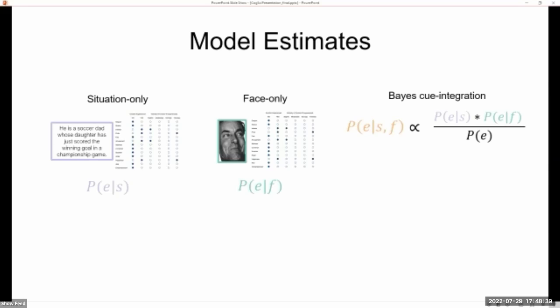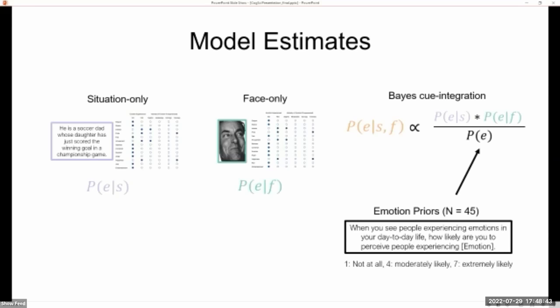And for our emotion priors, we essentially collect them empirically by asking people their likelihood of perceiving emotions, all of the 13 different emotion categories in their everyday life on a seven-point rating scale.